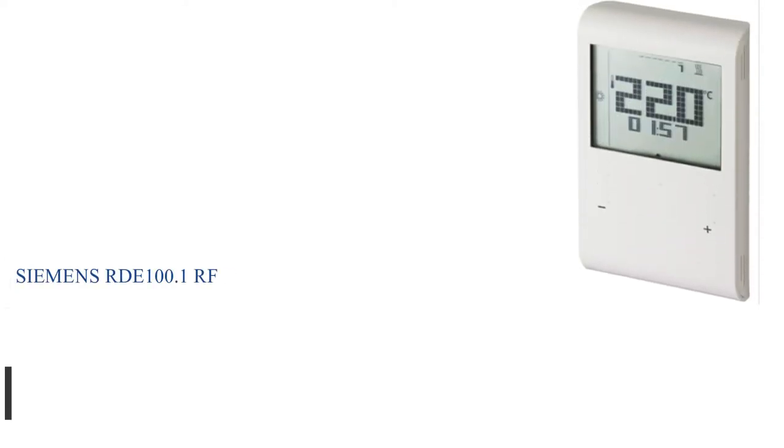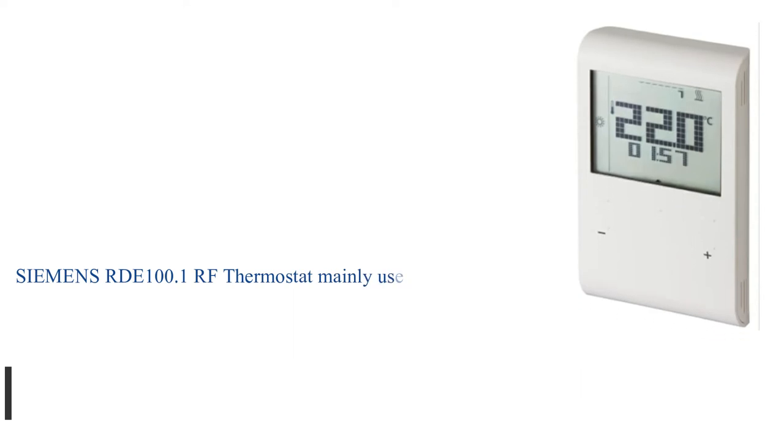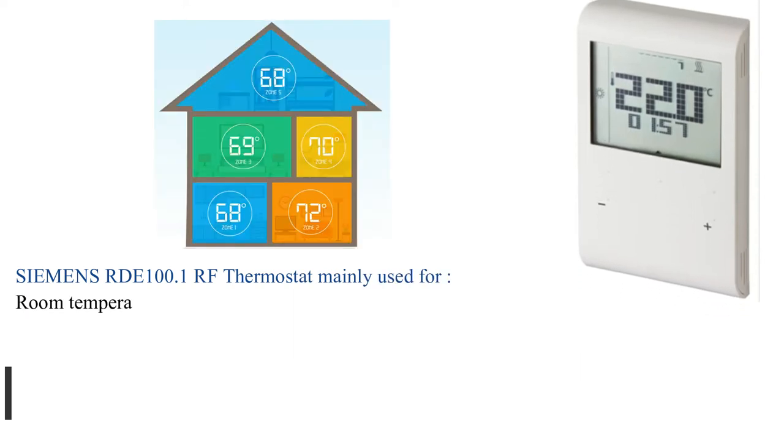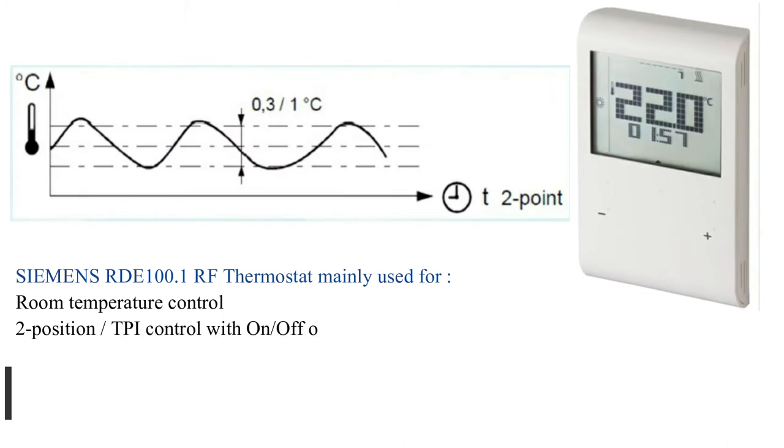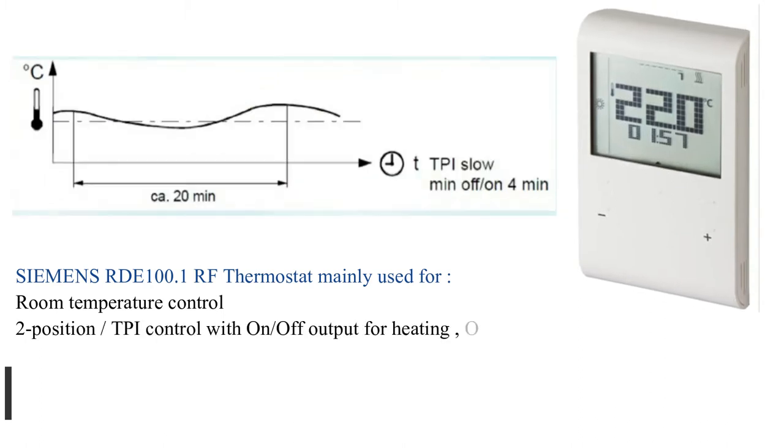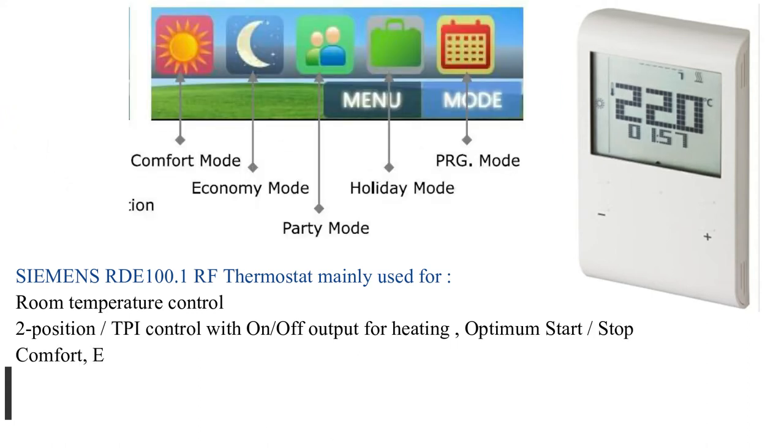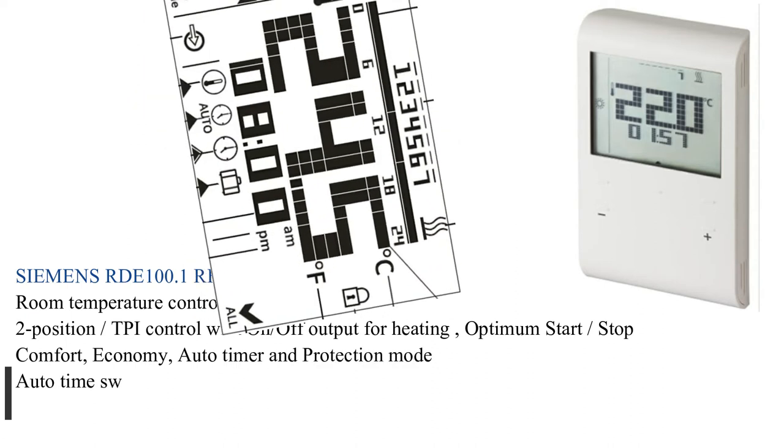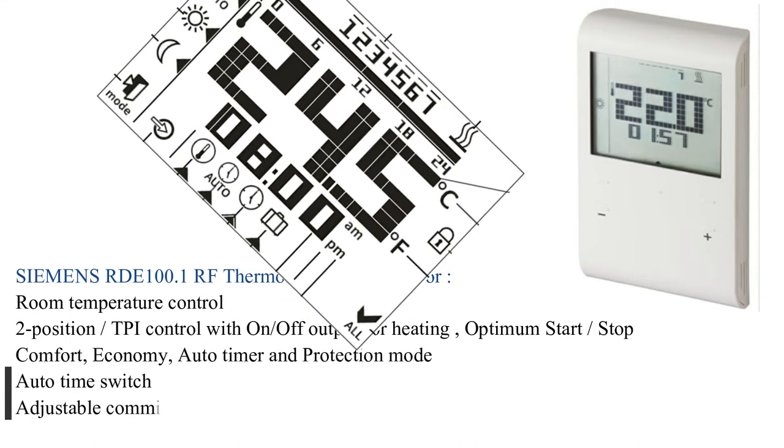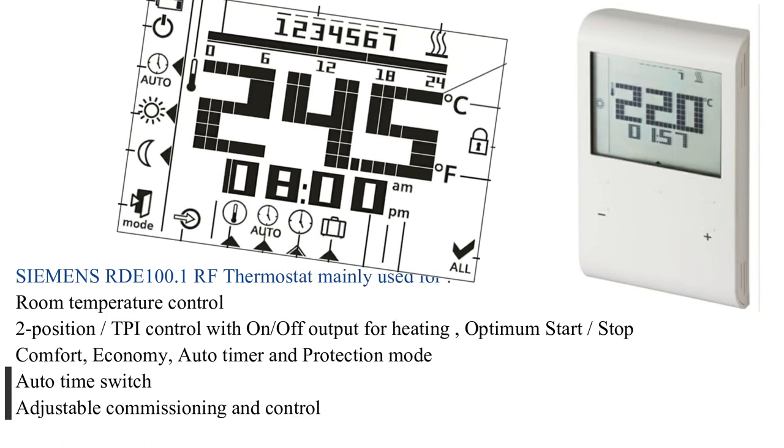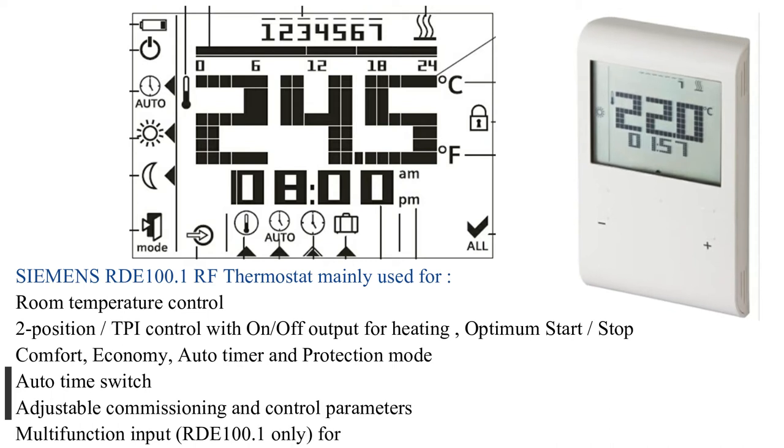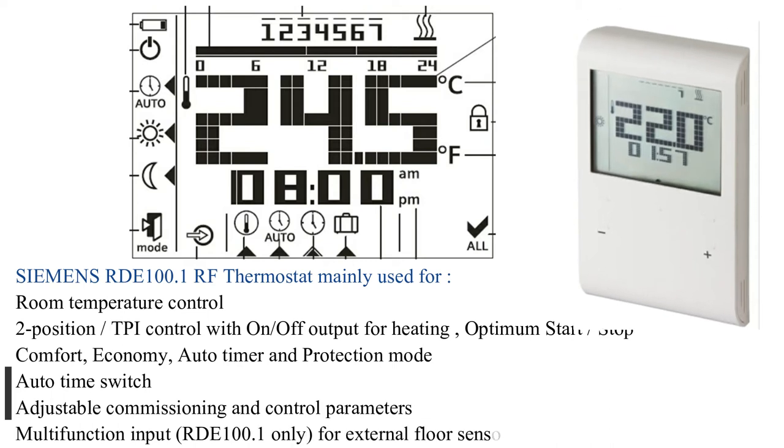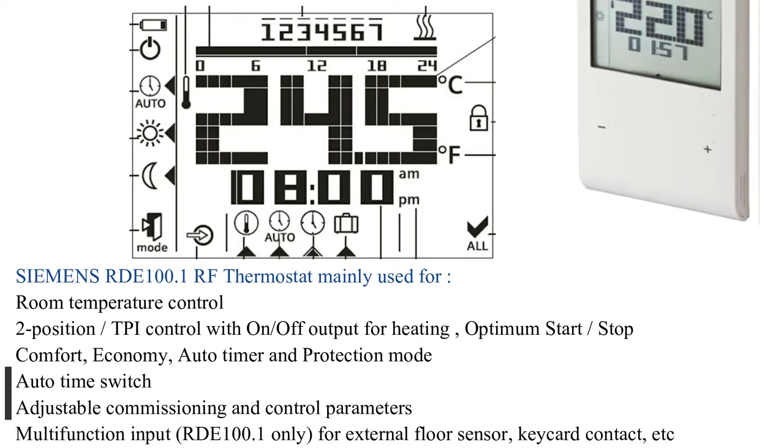Siemens RDE 100.1 RF Thermostat is mainly used for room temperature control, 2-position TPI control with on/off output for heating, optimum start/stop, comfort, economy, auto timer and protection mode, auto time switch, adjustable commissioning and control parameters, multi-function input (RDE 100.1 only) for external floor sensor, key card contact, etc.